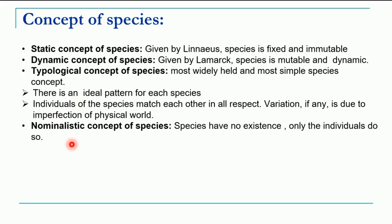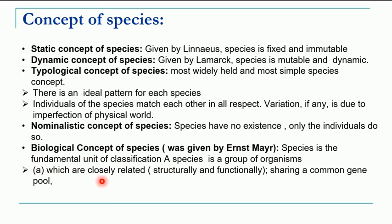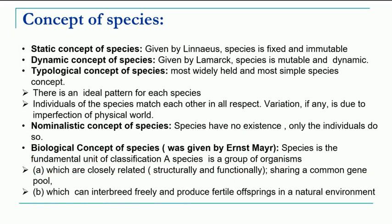The next concept is the nominalistic concept of species: according to this, species have no existence — only the individuals do. This is not much accepted now. The most accepted concept is the biological concept of species, given by Ernst Mayr, who is also a pioneer of taxonomy. According to him, species is the fundamental unit of classification — a group of organisms closely related not only structurally but also functionally, sharing a common gene pool, freely interbreeding among themselves, and always producing fertile offspring in the natural environment.